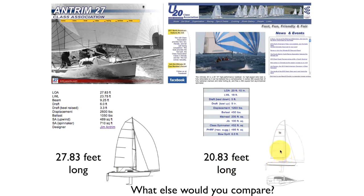So how would we compare these two boats, besides noticing that one is longer—about 28 feet long compared to about 21 feet long for the smaller Ultimate 20? What else would you compare?